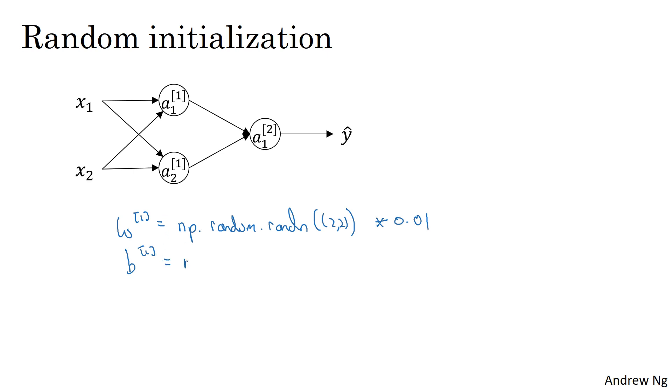And then b, it turns out that b does not have this symmetry problem, what's called the symmetry breaking problem. So it's okay to initialize b to just zeros because so long as w is initialized randomly, you start off with the different hidden units computing different things, and so you no longer have this symmetry breaking problem. And then similarly, for w2, you can initialize that randomly, and b2, you can initialize that to 0.